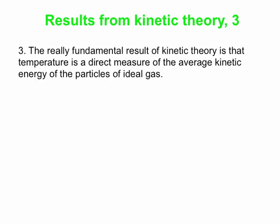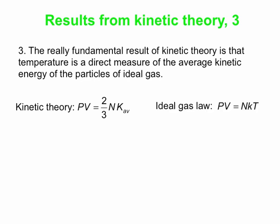Okay, here's the really critical result from kinetic theory, and it's really telling us something fundamental about temperature: that temperature is a direct measurement of the average kinetic energy of the particles in the gas. What results from kinetic theory—this is in the book if you want to go through that derivation—is that the product of pressure times volume, PV, is two-thirds times the number of molecules times their average kinetic energy. And if we compare that to the ideal gas law, PV equals NKT, then we can see by inspection that two-thirds K_av is KT (little KT).